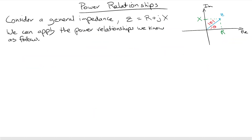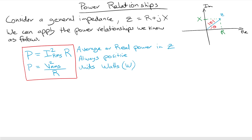For a general impedance with both a resistive component and a reactive component, we can apply these power relationships. To calculate real power, we use only the resistive value of the complex impedance, multiplied by the RMS current squared — this is Ohm's Law applied to only the resistive component. Another formulation is V squared over R. Real power is always positive and its units are watts.